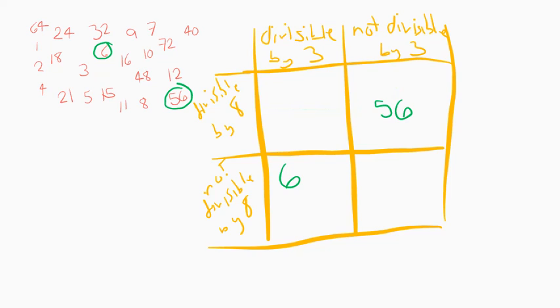And maybe you're thinking what happens if we have a number that's not divisible by either. Let's say 2, that's just going to go in this box. If I look up, it's not divisible by 3, and if I look to the left, it's not divisible by 8.